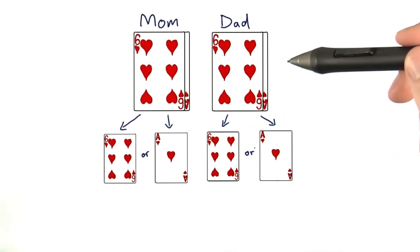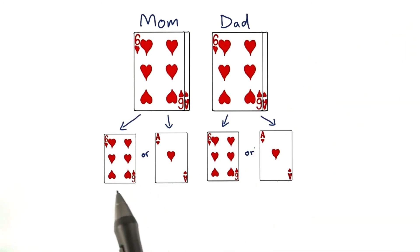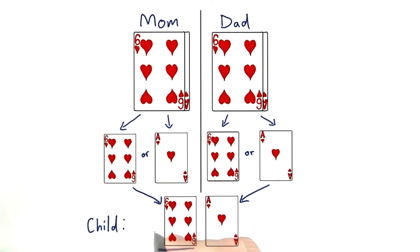When the parents have a child, each parent randomly passes on one of the cards. As long as the child ends up with at least one number card, she'll have normal heart function. But if she ends up with two aces, she'll suffer from that abnormal heart condition.